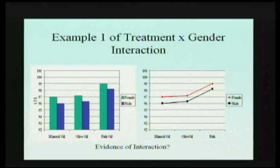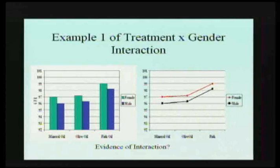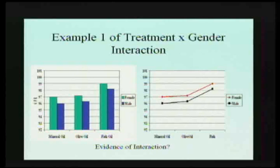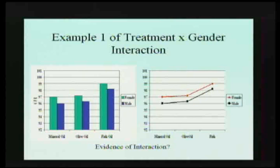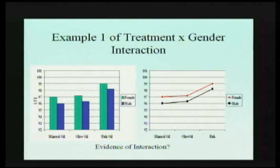Looking at the graph, females are more responsive regardless of treatment. No matter what the treatment is, females are above the males. This means both males and females react the same way to the treatments — both can benefit. This indicates there is no interaction effect; one group doesn't react differently from the other in terms of response to treatment.